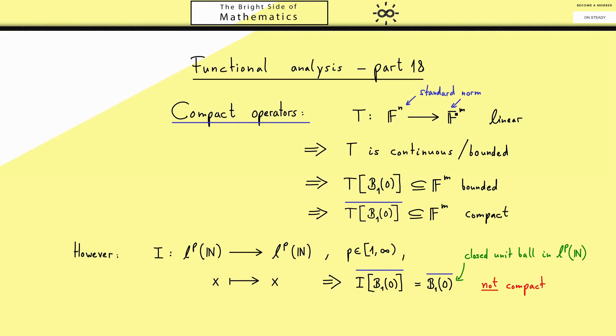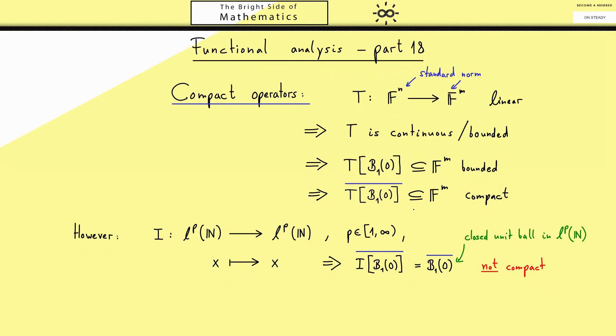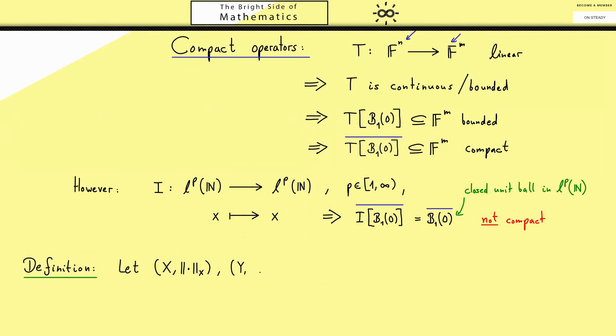So you should always remember compact operators is what we get when we extend the finite dimensional operators a little bit. Then let's write down the formal definition. We need two normed spaces, and often they will be Banach spaces. Then a bounded linear operator T from X to Y is called compact if this set is compact in Y.